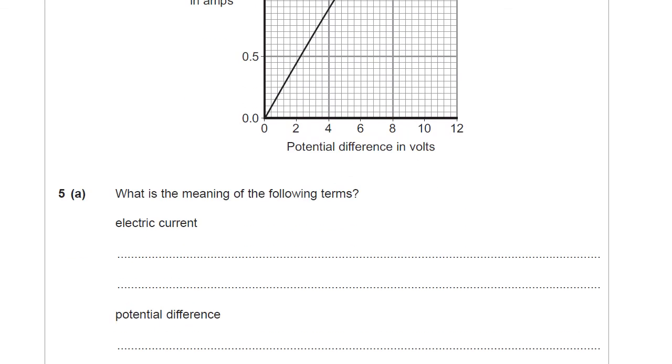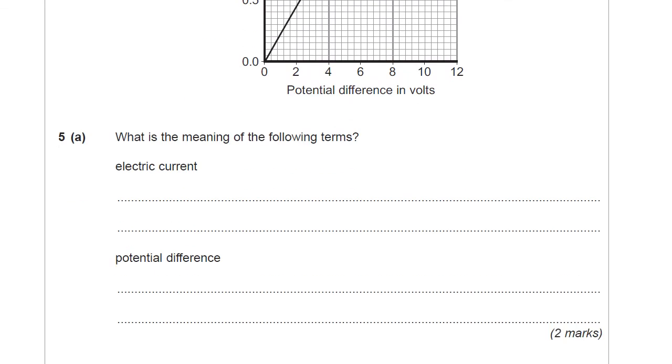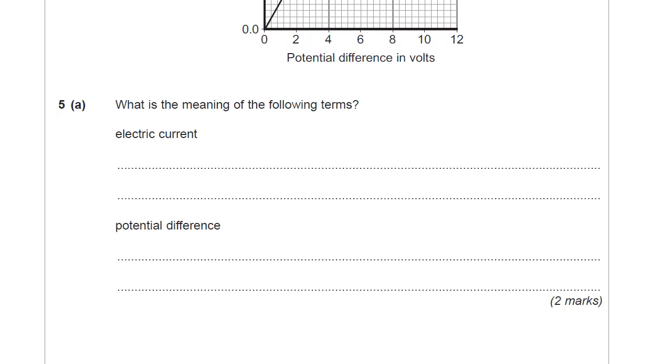The first part really isn't actually about the graph. It's just about understanding and being able to define two of the most important quantities in studying electric currents, electric circuits. So firstly have a go at defining what an electric current is and then what a potential difference is. I'll just remind you, potential difference is that thing we used to call voltage in key stage 3. Have a go and then come back.